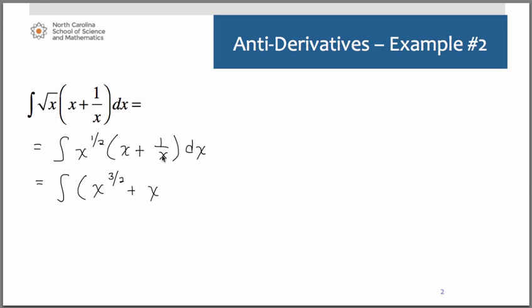So if we distribute, we get x to the three halves plus x to the negative one half, because remember, one over x would be x to the negative one, dx. Remember, we're going to add one to our exponent, then divide by that new exponent. Some people find it helpful as they're just starting this out to actually write that out. You get very good at working with fractions in your head. If we add one to the exponent of three halves, we get five halves. Then we have to divide by five halves.